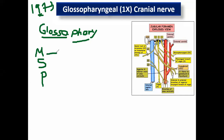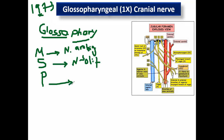The motor nucleus for nerves 9, 10, and 11 is the nucleus ambiguus. Ambiguous here means hidden — not clear — located in the medulla. The sensory nucleus, like the facial nerve, is the nucleus solitarius. The parasympathetic nucleus in the facial nerve is named the superior salivary nucleus, but here it is named the inferior salivary nucleus.